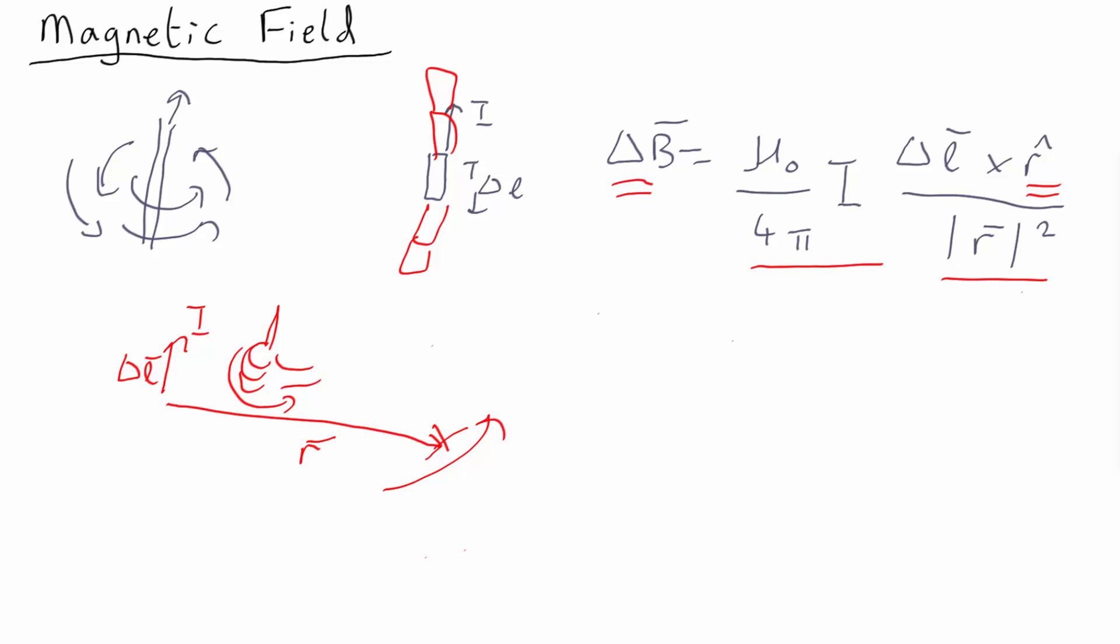The other way to think of it is, whenever you have a cross product, you have delta L cross R. What you do to work out the direction of the magnetic field is to curl your fingers from the first thing in the cross product to the second thing in the cross product.